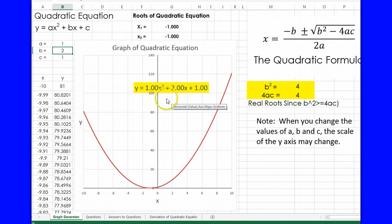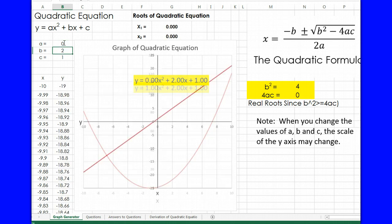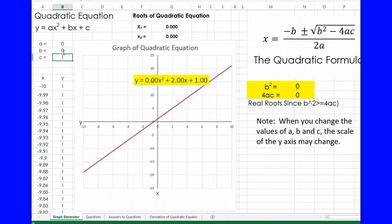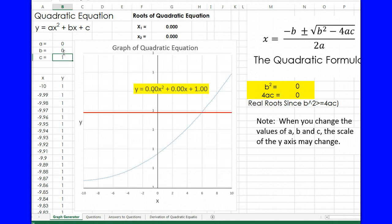All right, so let's begin by looking at this equation with a 0 for a, a 0 for b, and a constant 1 for c. You can see it's simply a straight horizontal line. The equation is really y equals 1.